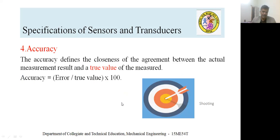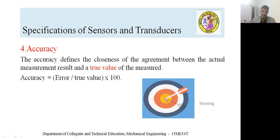Accuracy: when an arrow hits the center of a target, it is 100% accurate. Accuracy is measured in percentage — if accuracy is 1%, the arrow falls within the innermost circle; if 2%, it covers the next circle. Accuracy defines the closeness of agreement between the actual measurement result and the true value.